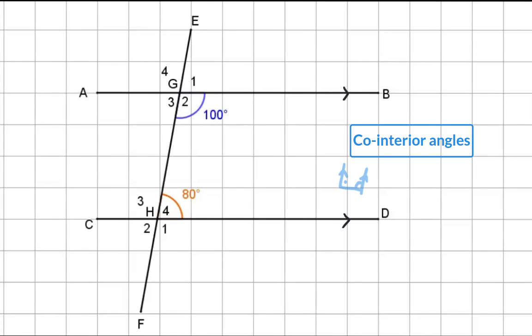Co-interior angles can also be applied on the other side of the transversal line, where g3 and h3 also add up to 180 degrees. Next, let's have a look at some examples.